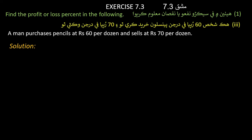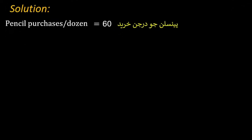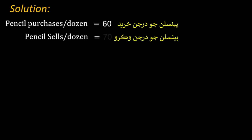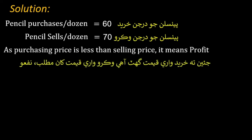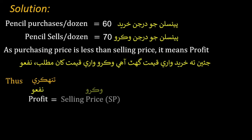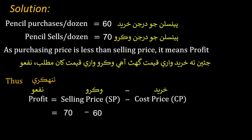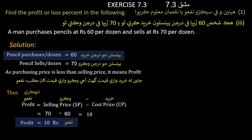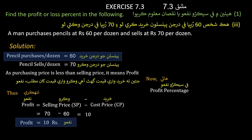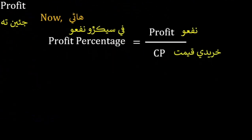Problem 3: A man purchases pencils at 60 rupees per dozen and sells at 70 rupees per dozen. Since purchasing price is less than selling price, it means profit. Profit = selling price − cost price = 70 − 60 = 10 rupees.